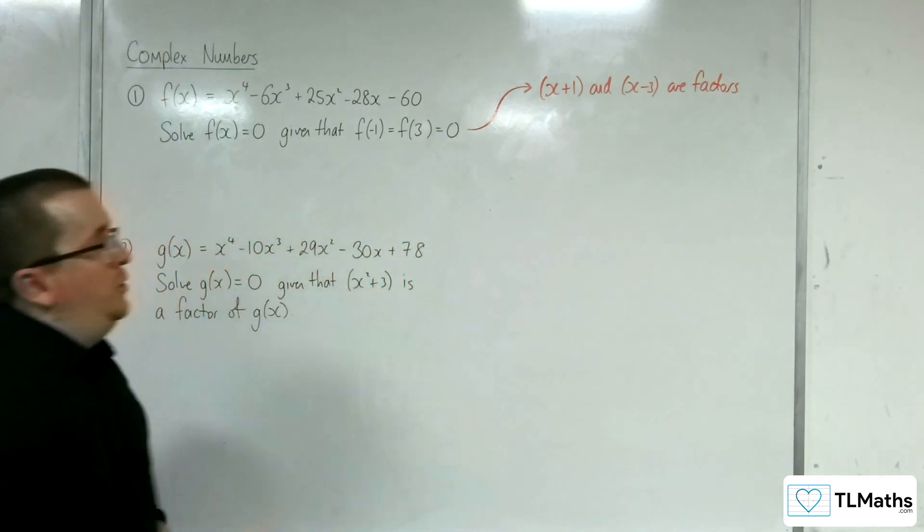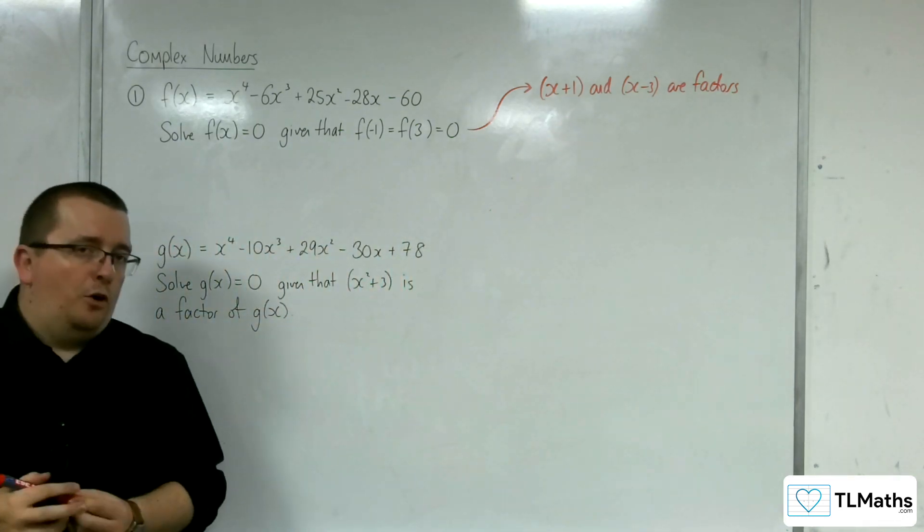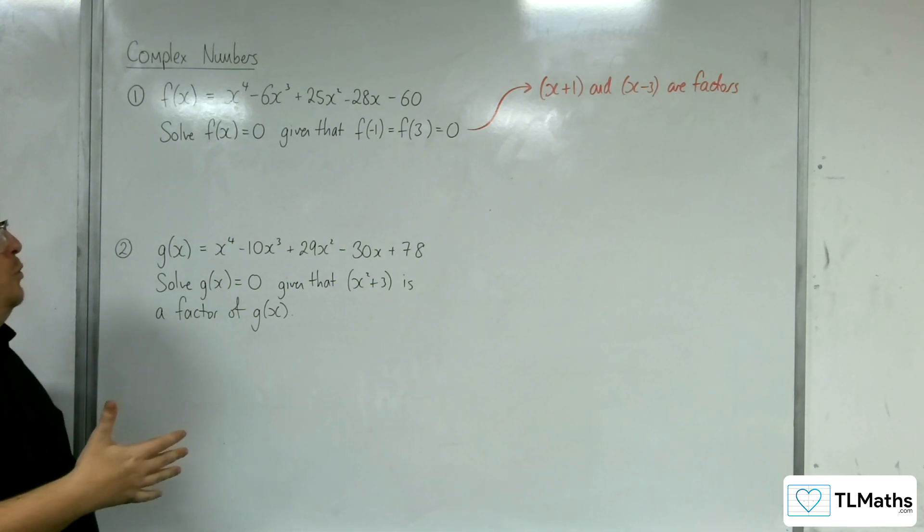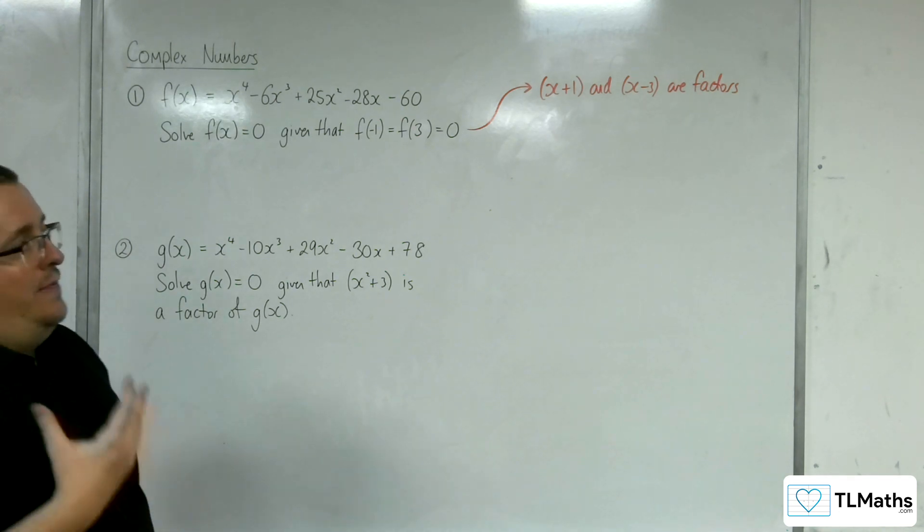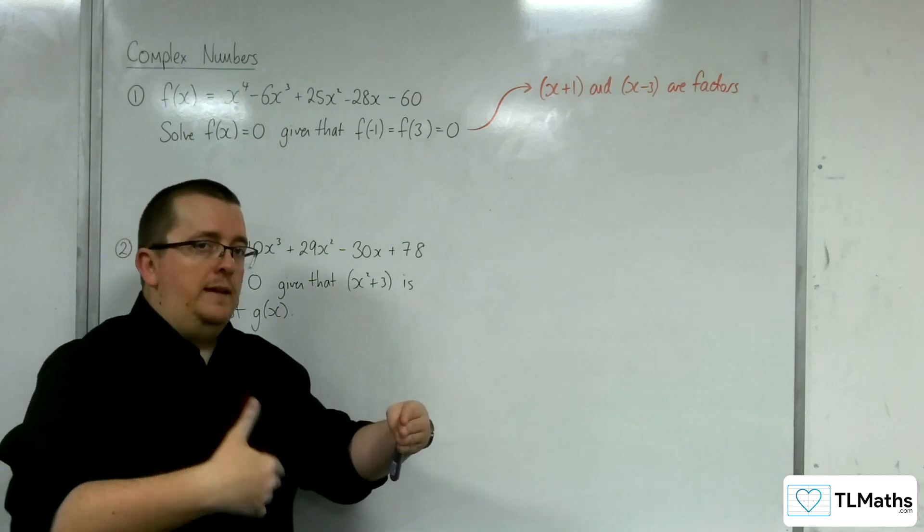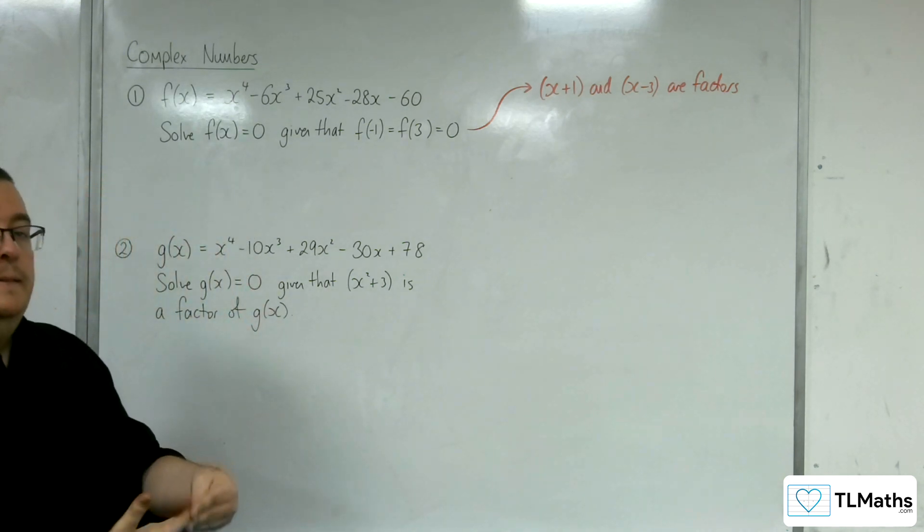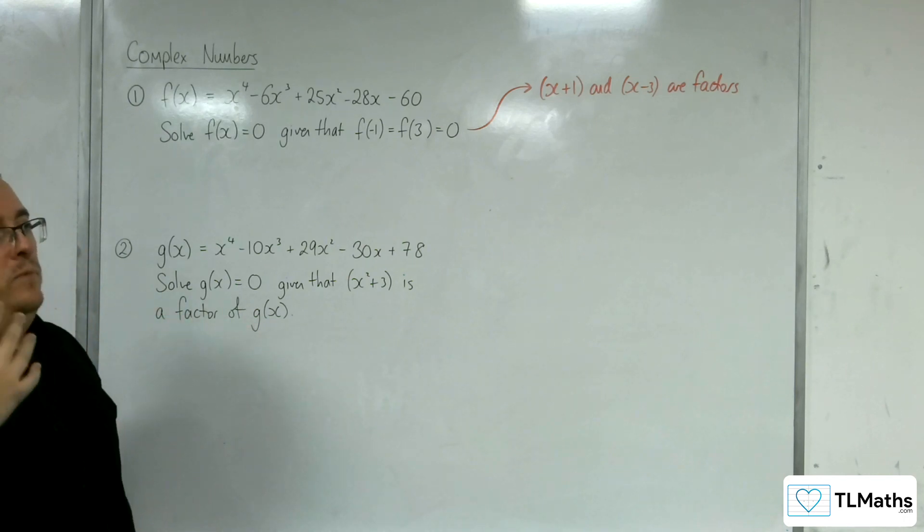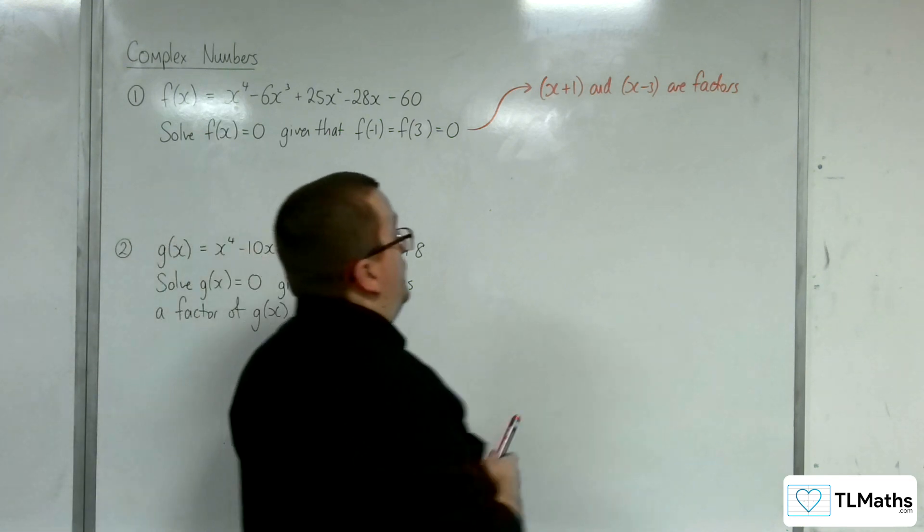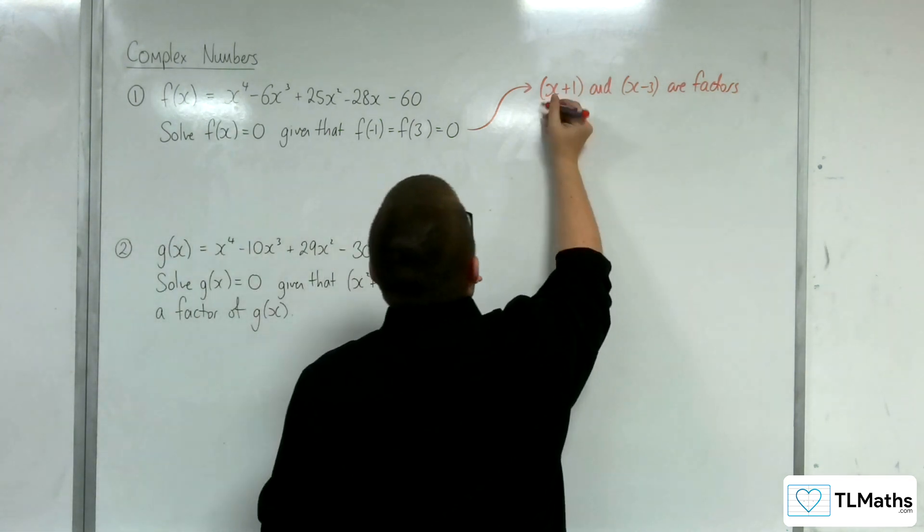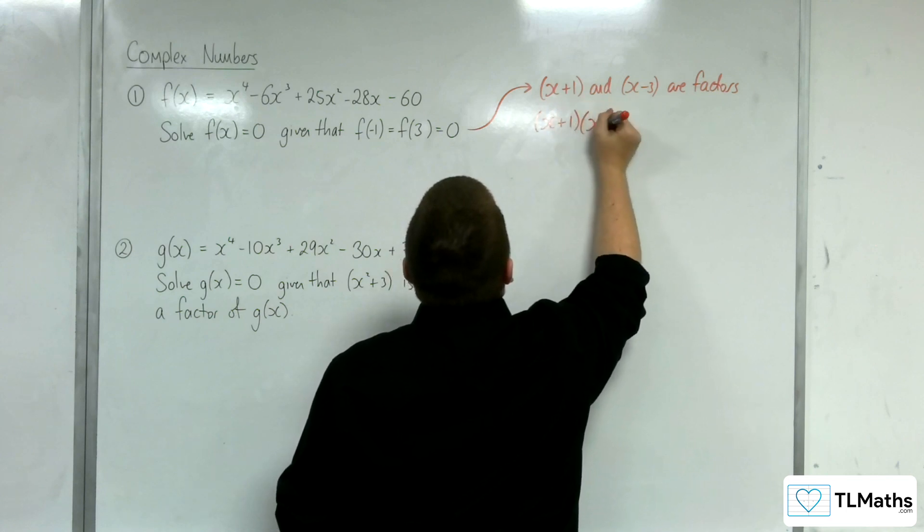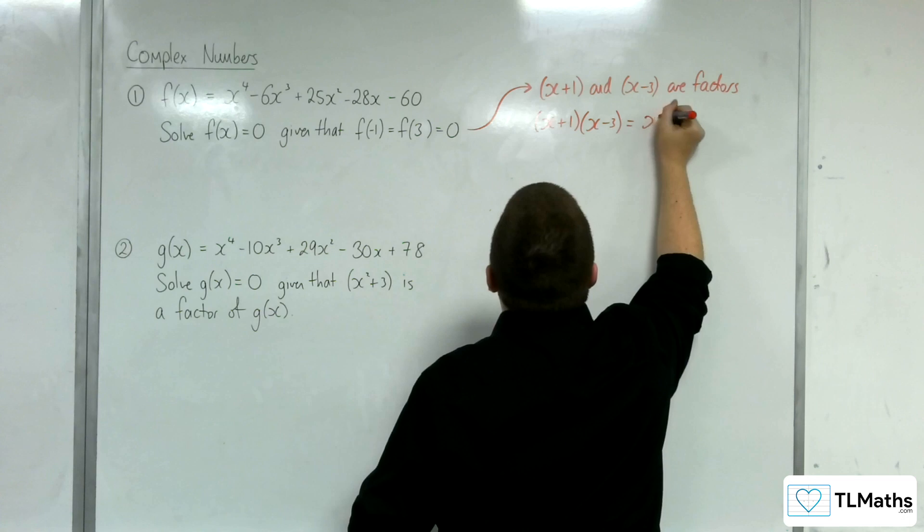So at this stage, depending on how confident you are with polynomial division, you could divide the quartic through by (x+1), and then you get (x+1) and a cubic, and then divide the cubic through by (x-3), and get your two linear terms and a quadratic term. That would involve doing polynomial division twice. I'm going to do polynomial division once by dividing instead by the quadratic. Now this is a perfectly valid way of doing it. You may or may not have seen it before.